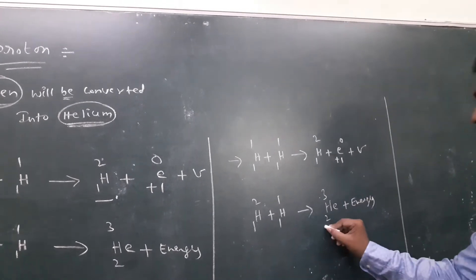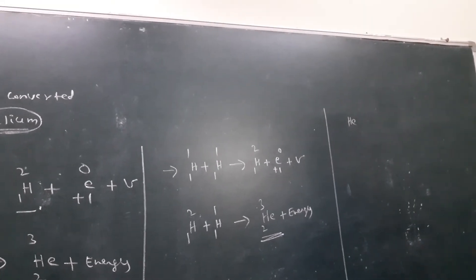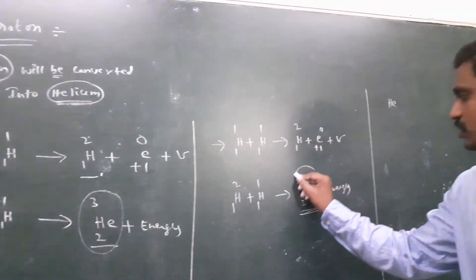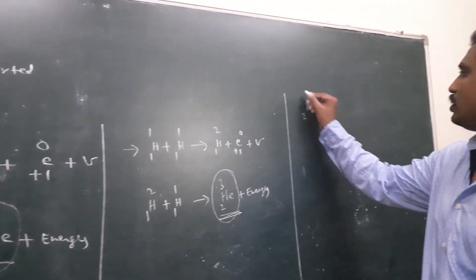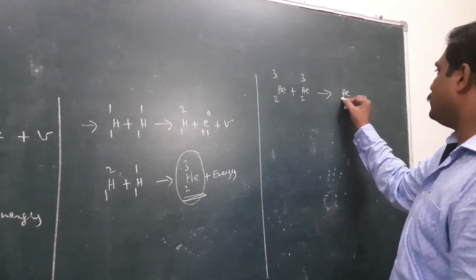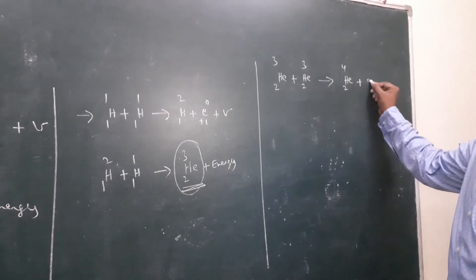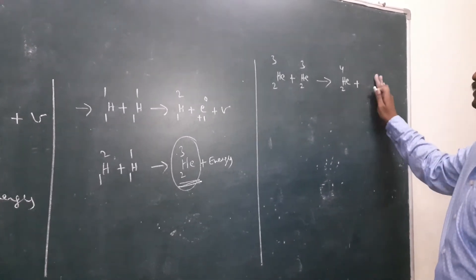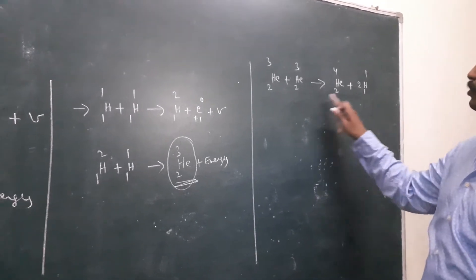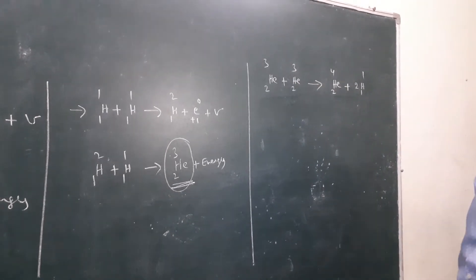This reaction occurs twice. So we get two Helium-2-3 nuclei. Then Helium-2-3 plus Helium-2-3 gives Helium-2-4 plus 2 protons. Checking: left side 2 plus 2 equals 4, 3 plus 3 equals 6; right side 2 plus 2 equals 4, 4 plus 2 equals 6. The equation is balanced.